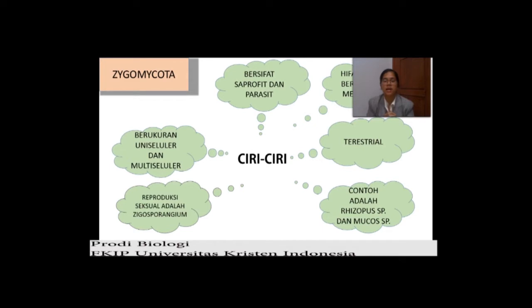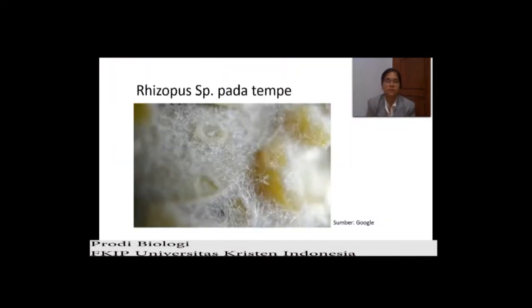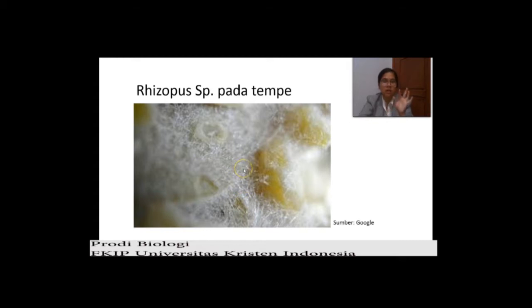Kemudian ada Mucor SP untuk pembuatan oncom — biasanya di Medan jarang ada oncom, biasanya ada di Pulau Jawa. Ini contohnya dari Rhizopus SP pada tempe. Kita lihat kalau diperbesar, tempe itu akan terlihat seperti benang-benang putih yang mengikat kedelainya.